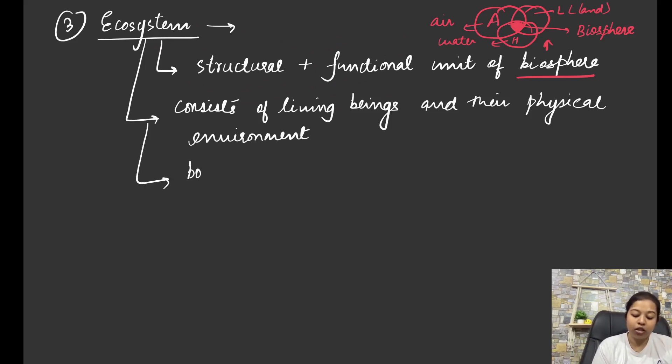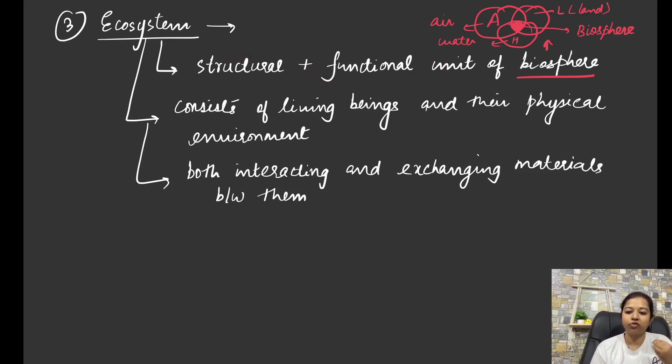Now both, both the living beings and the environment, they are interacting and exchanging materials between them. This is the key definition that you have to remember. That firstly this is a structural and functional unit. It has to have some structure. And it has to perform some function. What are those? We will do in the coming videos. And living beings and the physical environment would be there. And both, like the living beings also and the physical environment also, both will interact and exchange the materials between them. They will exchange things between each other. And they will interact with each other.